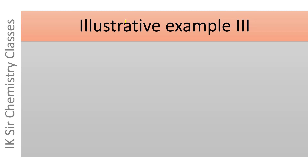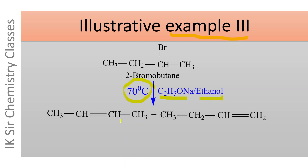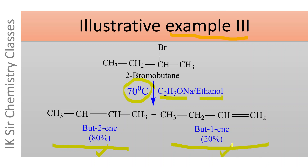Let us now see illustrative example number three. This is 2-bromobutane. When it is heated with sodium ethoxide in ethanol solvent at 70°C, two products are possible which are structural isomers of each other. These products are but-2-ene and but-1-ene. But-2-ene is obtained as the major product and but-1-ene as the minor product, making this another example of a regioselective reaction in which one of the various possible constitutional isomers of the product is formed predominantly.